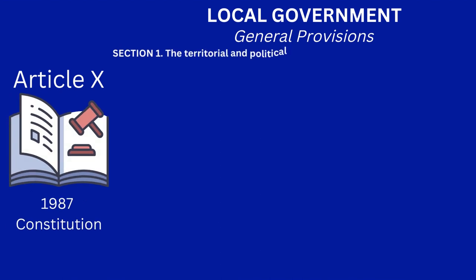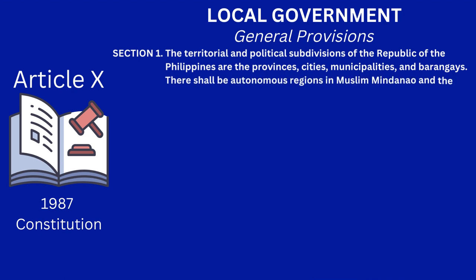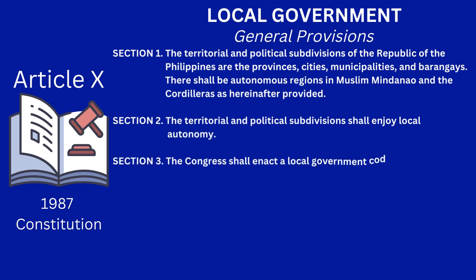According to Article 10 of the 1987 Constitution entitled Local Government and General Provisions, Section 1: the territorial and political subdivisions of the Republic of the Philippines are the provinces, cities, municipalities, and barangays. There shall be autonomous regions in Muslim Mindanao and the Cordilleras as hereinafter provided. Section 2: the territorial and political subdivisions shall enjoy local autonomy.